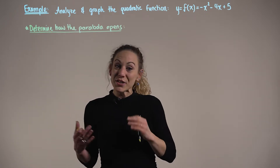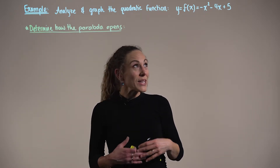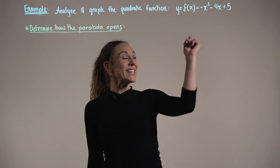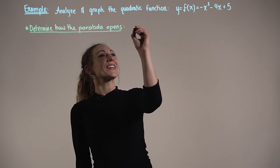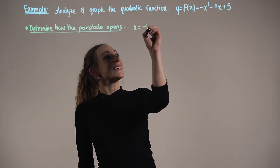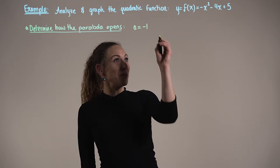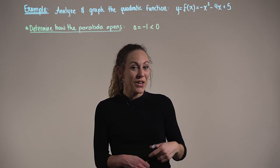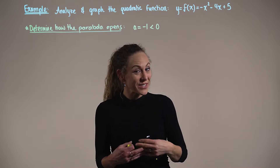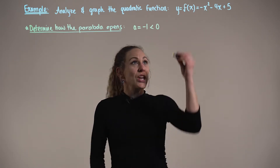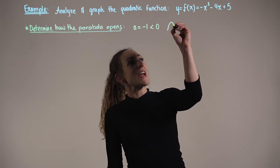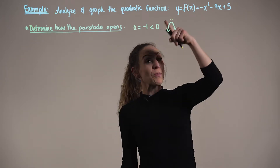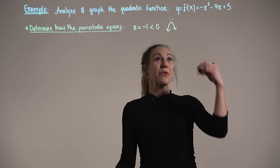To determine how a parabola opens, we need to think about the leading coefficient. In this case, our leading coefficient a is negative 1, and we know that negative 1 is less than 0. So it's negative — concave down like a frown. We can see that the parabola is opening downwards.